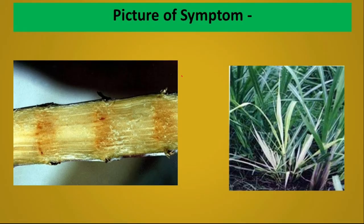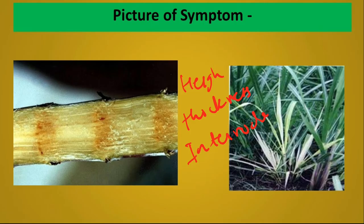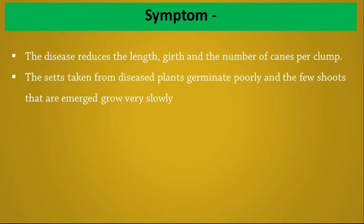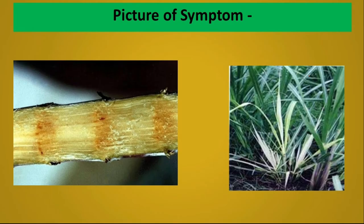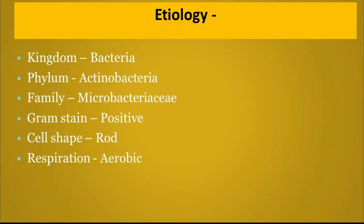In infected plants, height is reduced and leaves turn yellow. If infected plants are cut and examined, orange color discoloration is visible in the node region. The disease reduces the length, girth, and number of canes per clump. Sets taken from diseased plants germinate poorly and the few shoots that emerge grow very slowly. Infected plants produce fewer tillers.